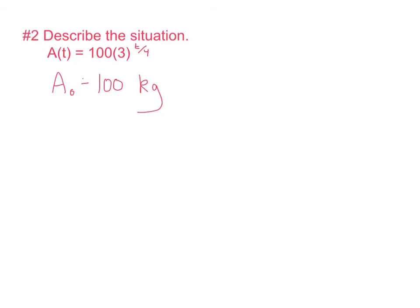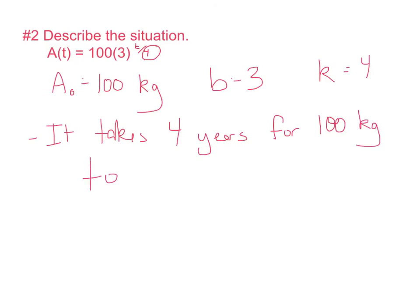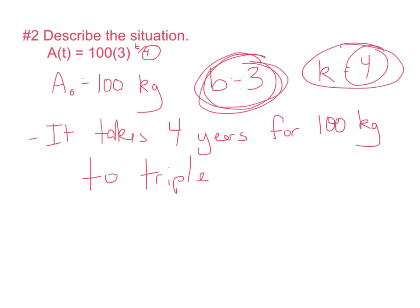What is a? Oh, we already wrote that. What's b? b is 3. t we don't know. And k is 4. So, this is what we would write. We would say, okay, it takes four years. We're talking about years. Four years. That's what the k is. It takes four years for the 100 kilograms of whatever we're talking about here to do what? To do b. But what is b? b is 3. To triple. It takes four years. That's k. For b to happen. It takes four years for b to happen.